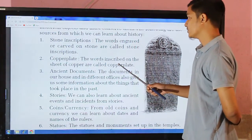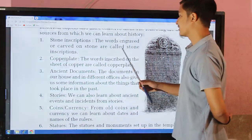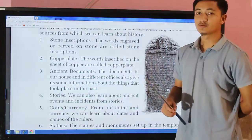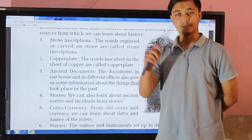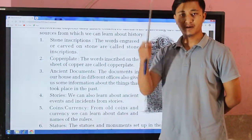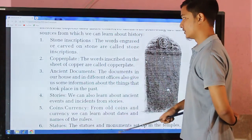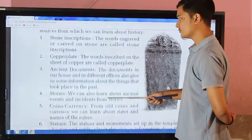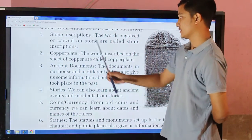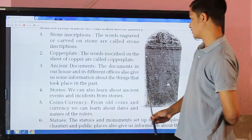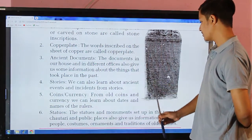The first source is stone inscription. The words engraved or carved on stone are called stone inscriptions. An example is shown here — words engraved on stone and copper are carved and made into inscriptions.